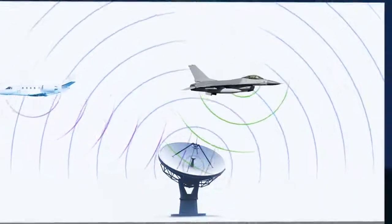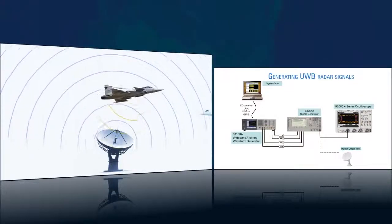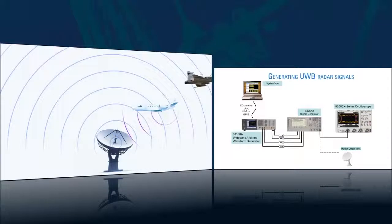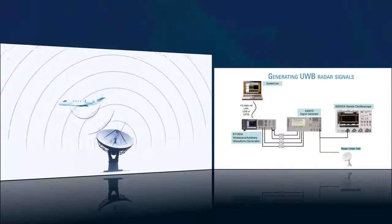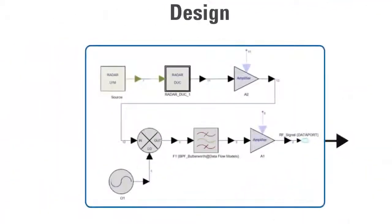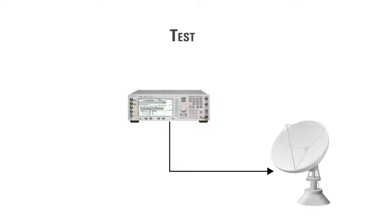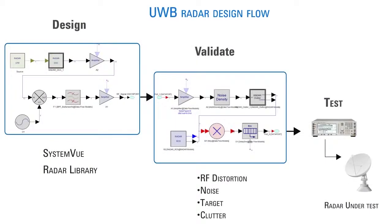To dramatically lower cost, Agilent SystemVue can be used with Agilent test equipment to model many of these same scenarios. SystemVue is more than just waveform creation software — it is an electronic system-level design platform that allows you to first design a complete radar system that includes both baseband DSP and RF content, validate the system under real-world conditions, and then create waveforms for testing.